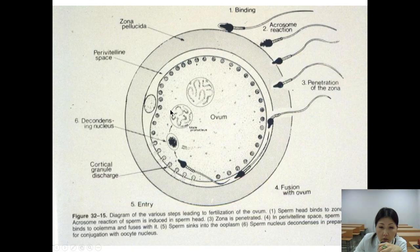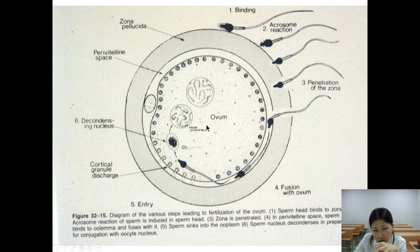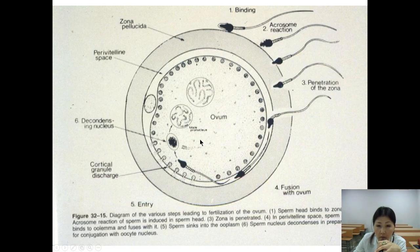The male pronucleus and female pronucleus are formed, then they fuse to produce 46 chromosomes, as you remember from embryology. There are 23 chromosomes from each gamete, because meiosis occurs only in germ cells. The result is a fertilized egg with 46 chromosomes.